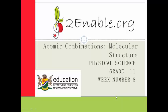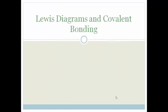Good day grade 11. Welcome to the third lesson in week 8. In this lesson we're going to be talking about Lewis diagrams and covalent bonding. Lewis diagrams are a way of drawing your valence electrons and giving us a pictorial idea of how atoms bond.